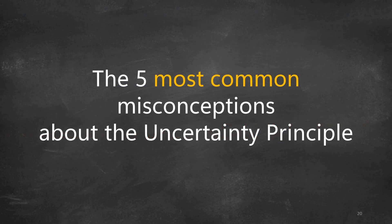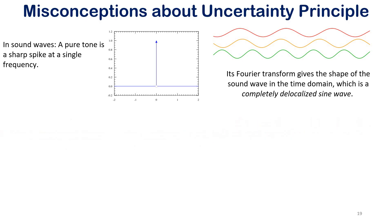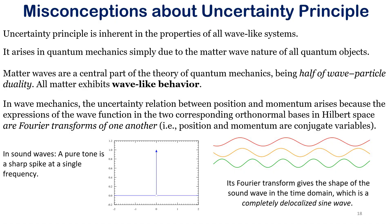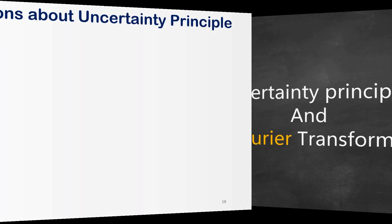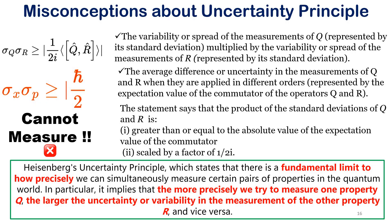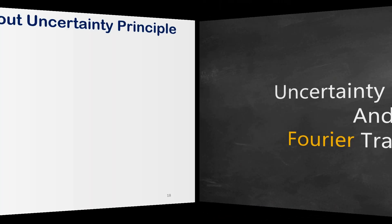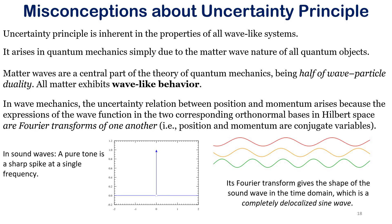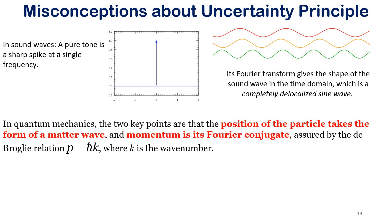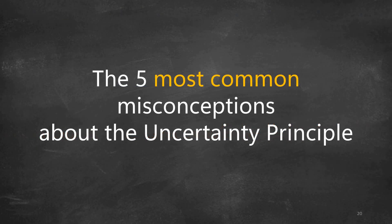Because this Fourier transform gives a kind of dispersion of standard waves, the Fourier transform gives a delocalized sine wave. I have not gone into the mathematical details — that will perhaps be done in the next part of the video. So we come to the five most common misconceptions about the uncertainty principle.